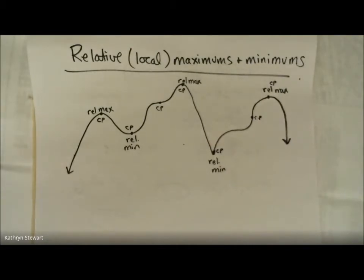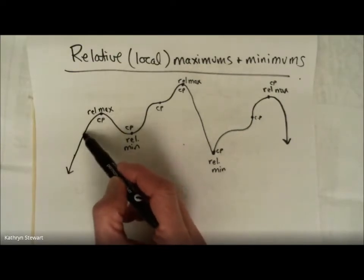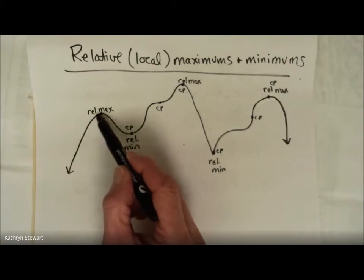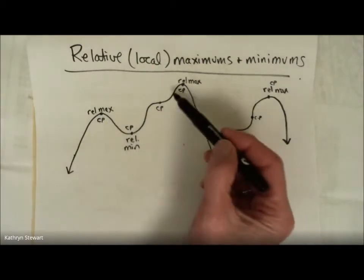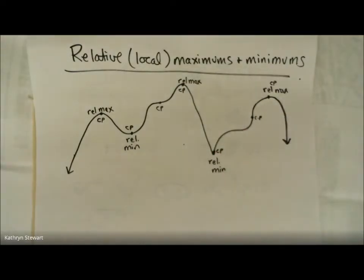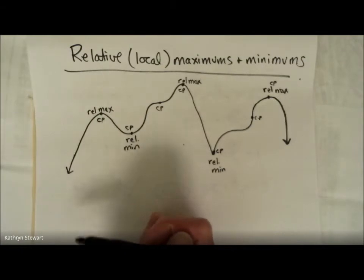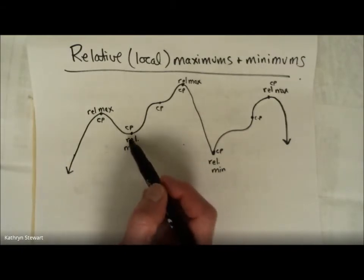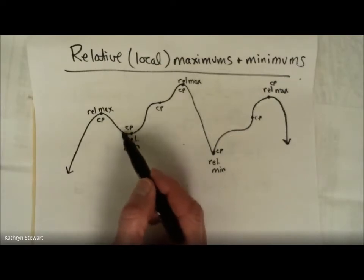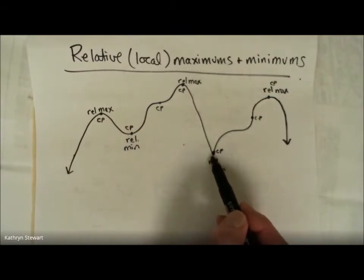Those were not relative maxes or mins. A relative max is a critical point where the slope of the function is positive and then becomes negative. The derivative at a relative max changes from positive to negative. Similarly, a relative min occurs at a critical point where the derivative changes from negative to positive — the slope of the function is negative then positive.